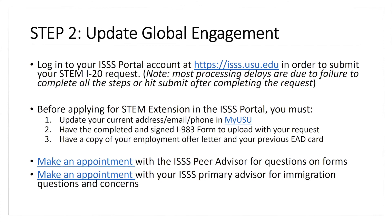Make sure you have a copy of your employment offer letter and your previous EAD. Everything else is very similar to your process when you requested standard OPT, but these additions are important, as well as making sure you have a copy of your degree. To complete the I-SSS portal request, make sure you have everything. If you have questions, start early and make an appointment with an advisor or peer advisor.